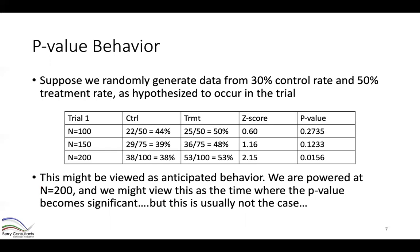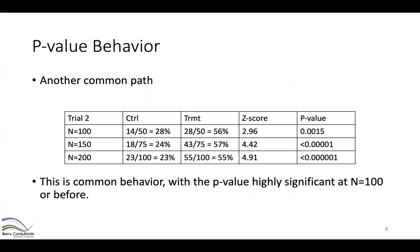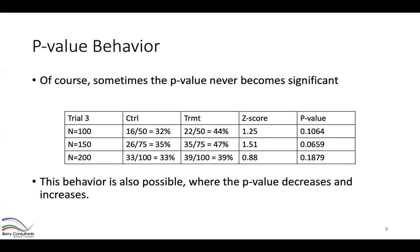It turns out that's not usually the case. In another example trial with the same assumptions, the data was very highly significant well before a sample size of 200 — even very early on, the p-value was well below two-and-a-half percent. This is not uncommon. On the other hand, sometimes the p-value never becomes significant, and we also see the p-value is not monotonic — sometimes going up, then back down.